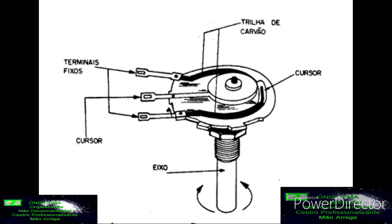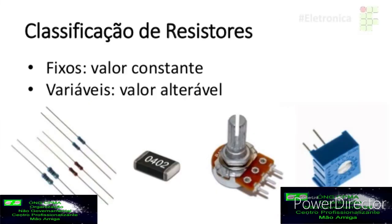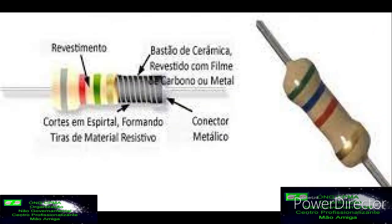A tolerância do resistor denota o quão perto a resistência real está do valor nominal. Não confunda valor nominal com valor real. Valor nominal é aquele que está escrito no corpo do resistor. E o valor real é aquele quando a gente pega o multímetro ou o omímetro e mede o componente. Por exemplo, um resistor de tolerância de mais ou menos 5% indica que a resistência real está dentro de mais ou menos 5% do valor nominal.